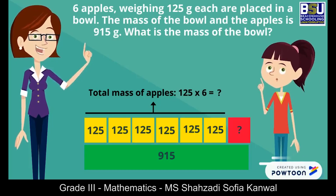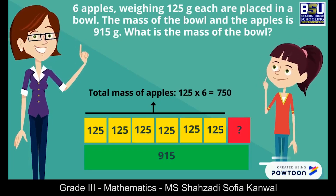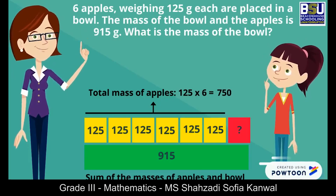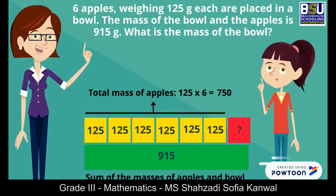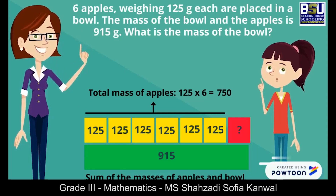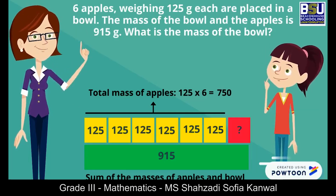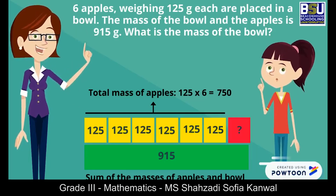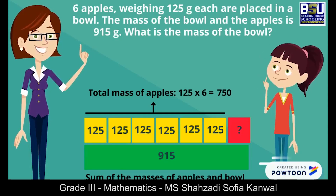It will make 750 grams. That's correct. Since the sum of the masses of the bowl and the apples is 915 grams, we will subtract the mass of the apples to get the mass of the bowl. 915 minus 750 is equal to 165. Good job.